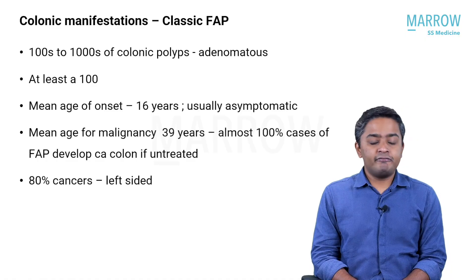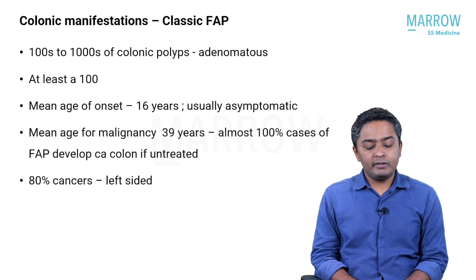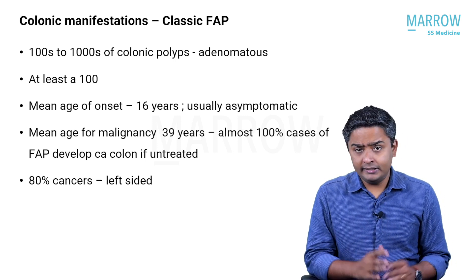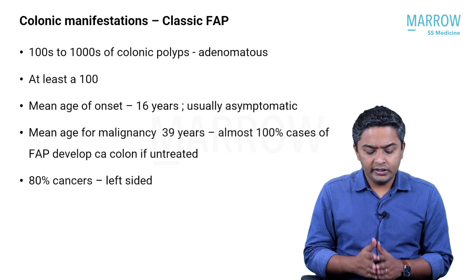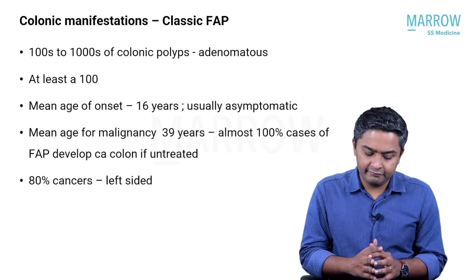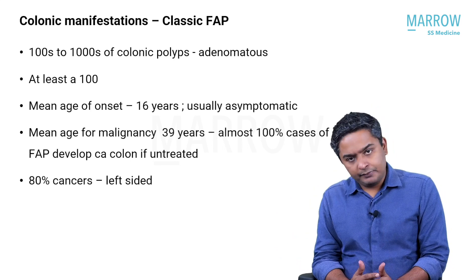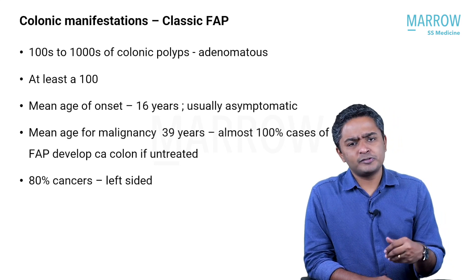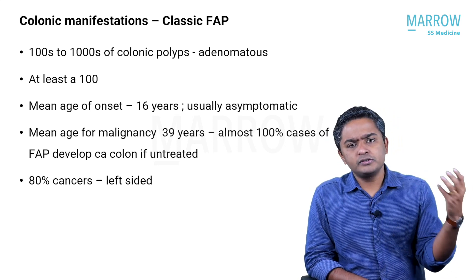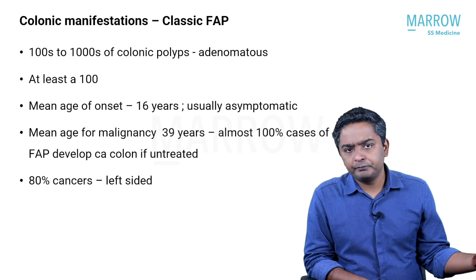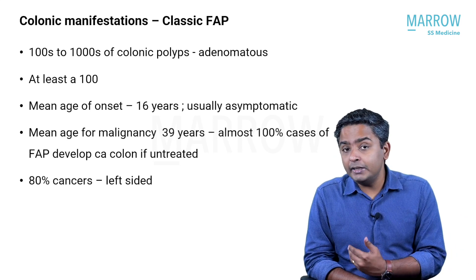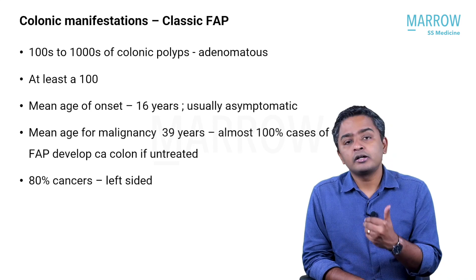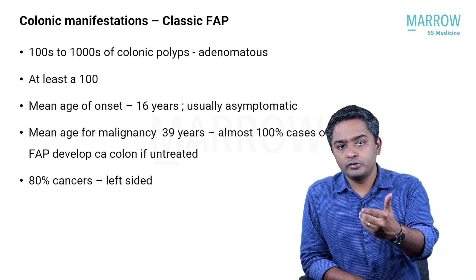What are the classic FAP colonic manifestations? Familial adenomatous polyposis syndrome and the attenuated FAP. Looking at the classic FAP, adenomatous polyposis is characterized by hundreds to thousands of polyps in the colon. Minimum 100 polyps is what you need to call it classic FAP polyposis.